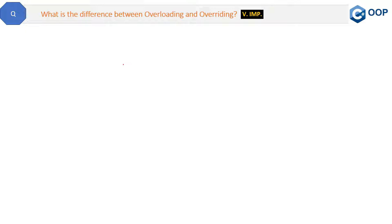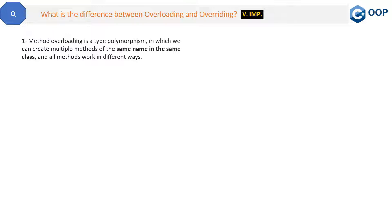We already discussed the overloading concept in previous videos, so I am not going to explain it in detail here, but we will see the definition. Method overloading is a type of polymorphism in which we can create multiple methods of the same name in the same class, and all the methods work in different ways. That is method overloading.